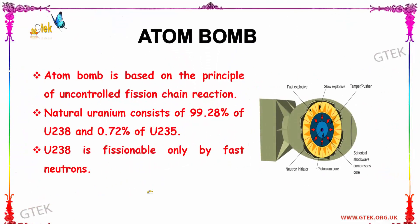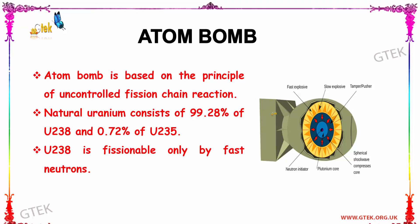The chain reaction is the major principle behind atom bombs. Atom bombs are based on the principle of uncontrollable fission chain reaction. Natural uranium consists of 99.28% uranium-238 and 0.72% uranium-235. Uranium-238 is fissionable only by fast neutrons.